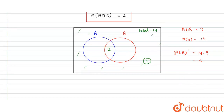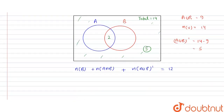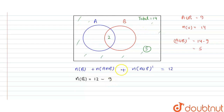Now solving for N(B): we write N(B) plus N(A intersection B) plus N(A union B complement) equals 12, from Case 1. So N(B) equals 12 minus N(A intersection B) minus N(A union B complement), which is 12 minus 2 minus 5 equals 5. Therefore N(B) equals 5.